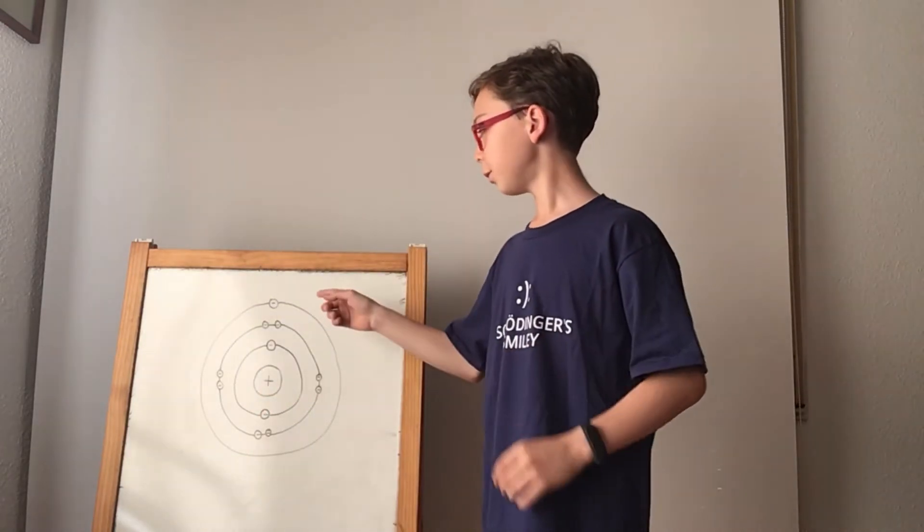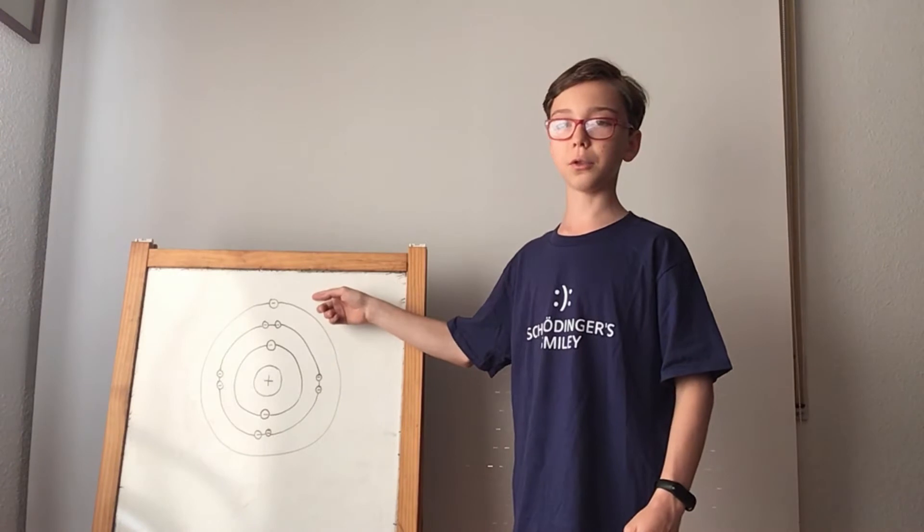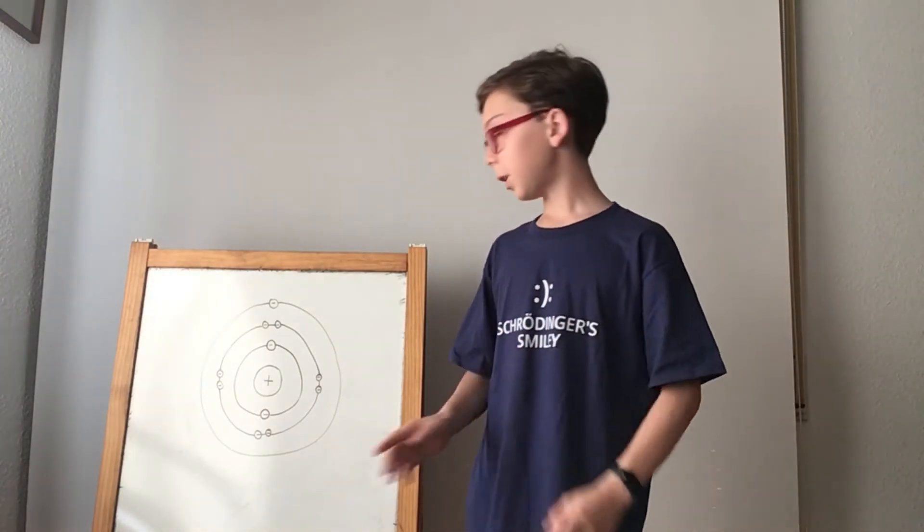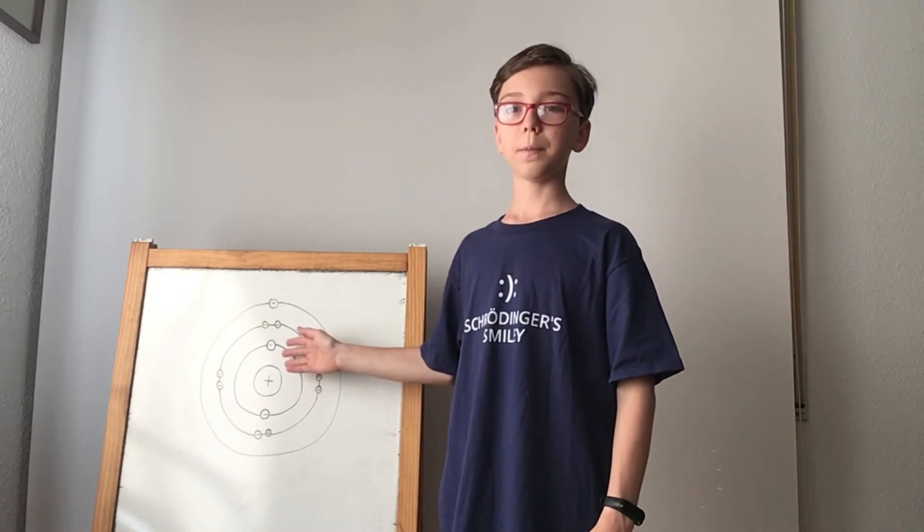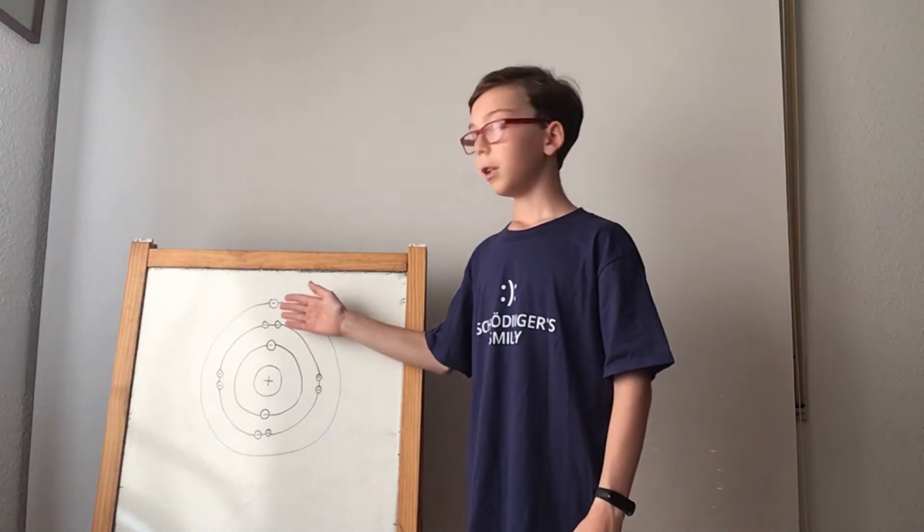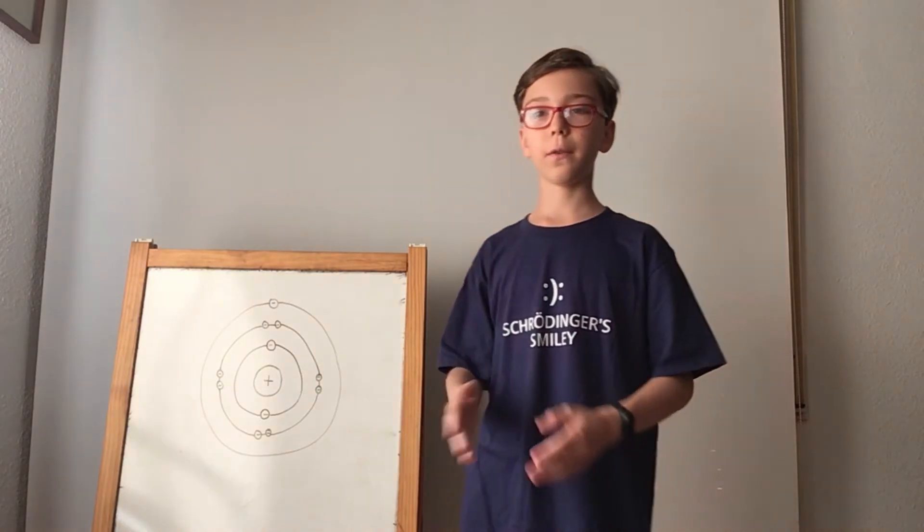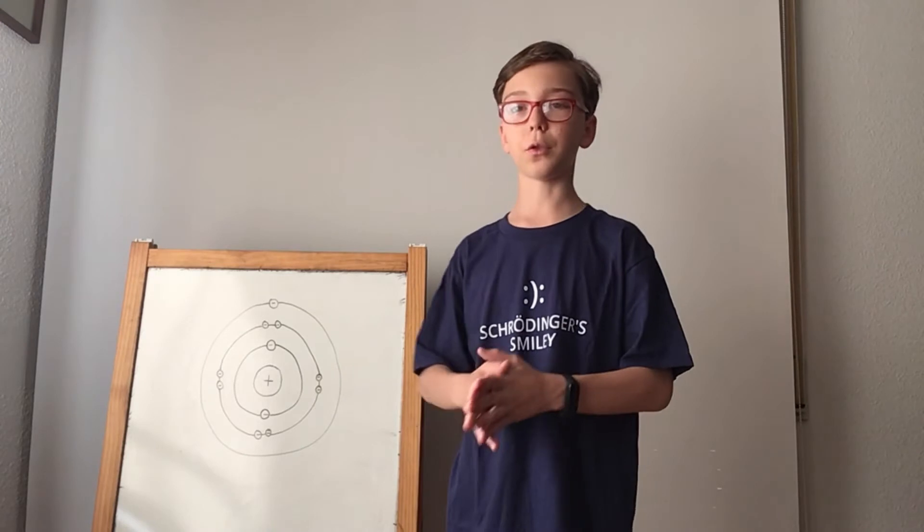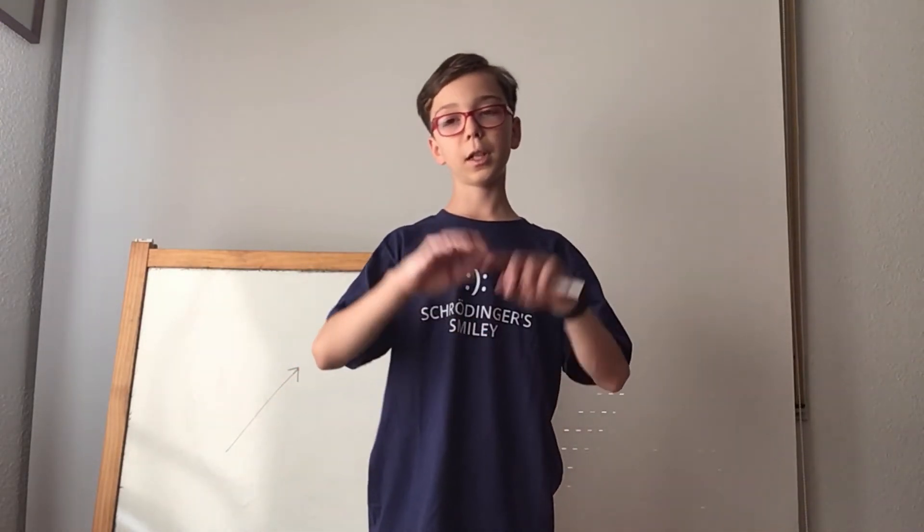But what if we had one extra electron that doesn't have a counterpart, an unpaired electron? Well, this would make the atom magnetic, basically. It would have a non-zero spin and angular momentum of the average of the electrons. And so this would give the atom a magnetic field.